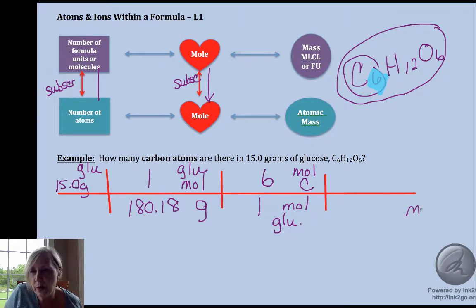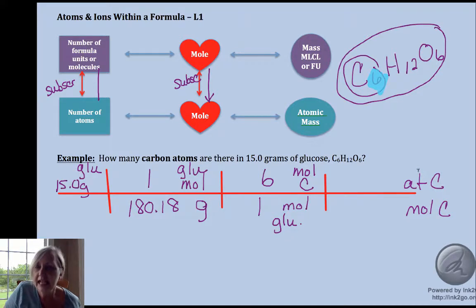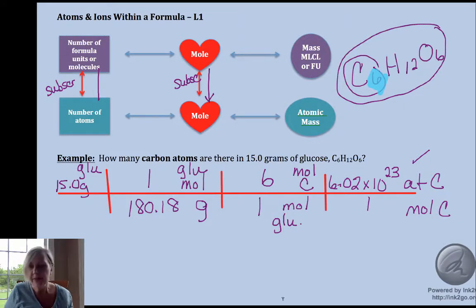Now I want to get rid of moles of carbon and I want to go to atoms of carbon. Atom is something we can count, so that's where we'll use the 6.02 times 10 to the 23rd to 1, and you would get that same 3.01 times 10 to the 23rd.